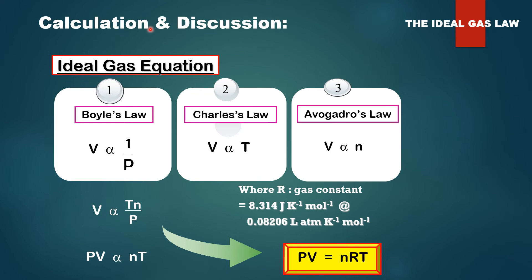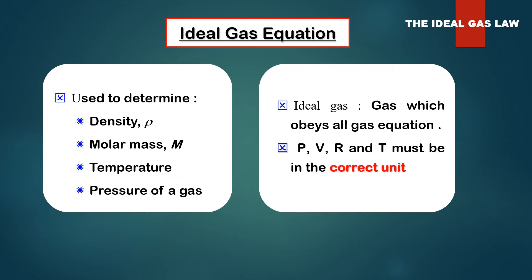Okay, let's check. For this part, we are going to apply the ideal gas equation. As we know, ideal gas equation is from three gas laws which are Boyle's law, Charles's law and Avogadro's law. And then you notice volume is directly proportional to temperature and number of moles and inversely proportional to pressure. So, PV is directly proportional to nT. Based on here, we are adding the directly proportional constant which is R with the value 8.314 joule per Kelvin per mole or 0.08206 liter atm per Kelvin per mole. From this PV equal to nRT, we can use to determine the density, molar mass, temperature, pressure of a gas. Always remember this is ideal gas equation. And then you must bear in mind that PVRT must be correct unit.